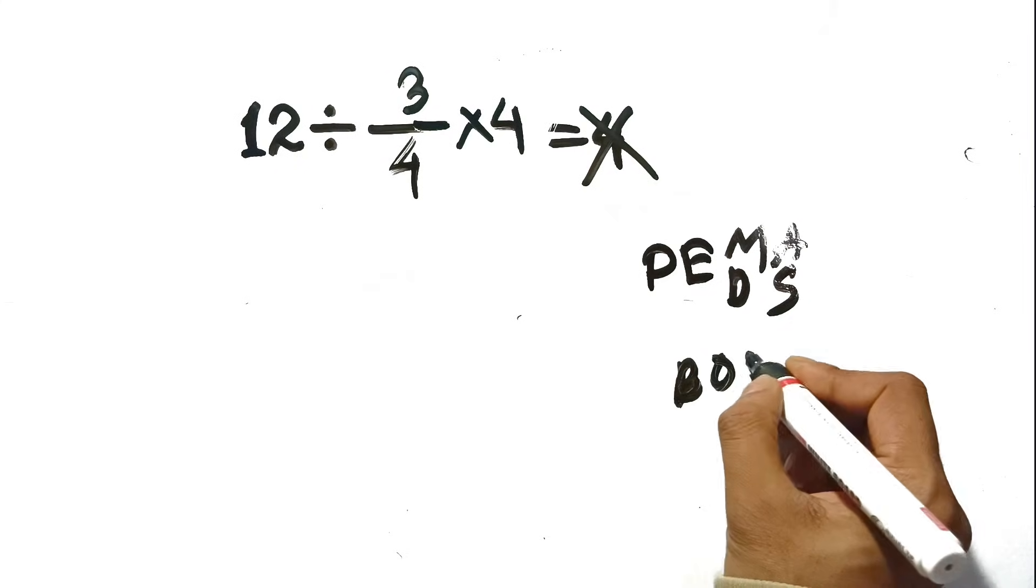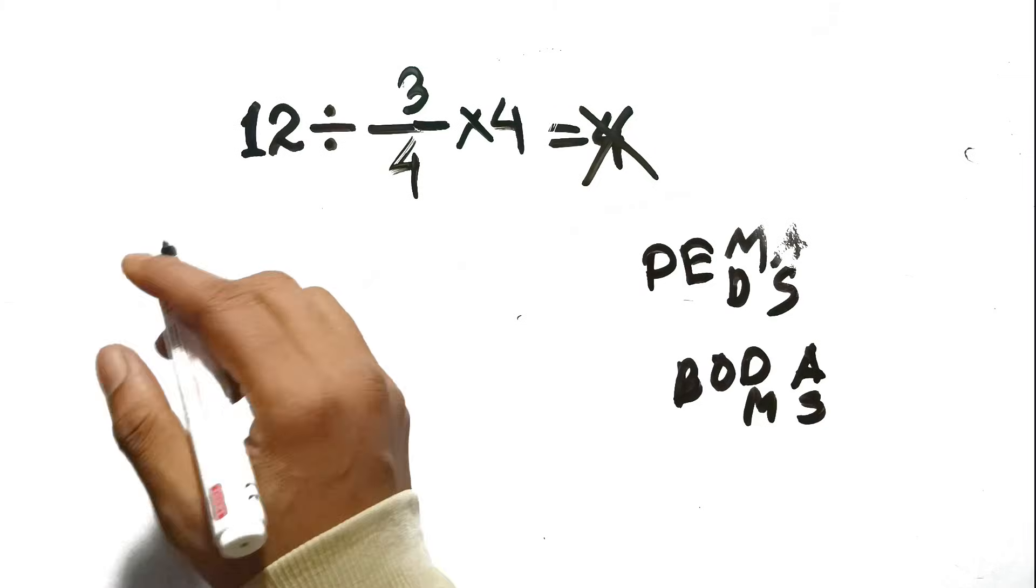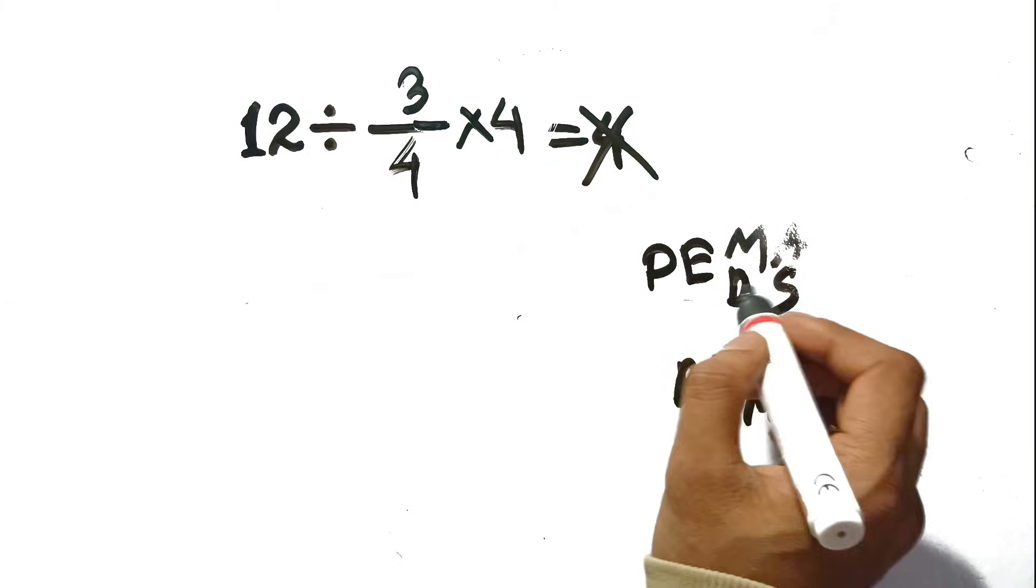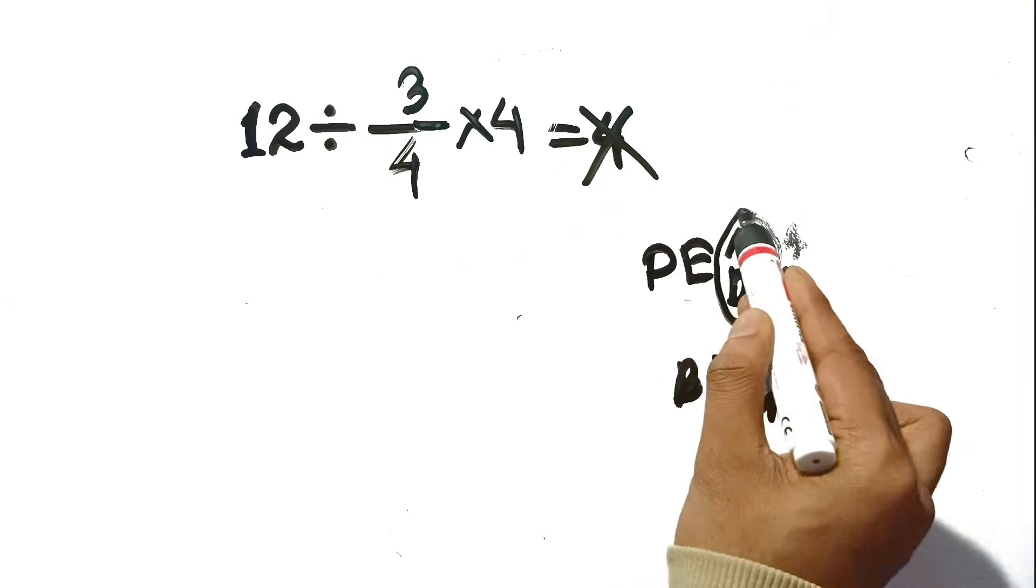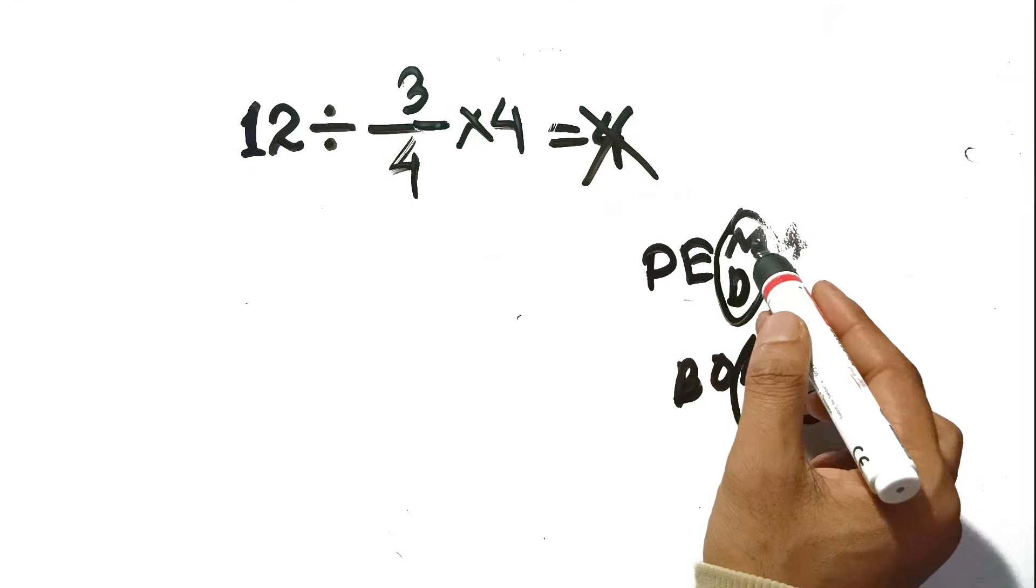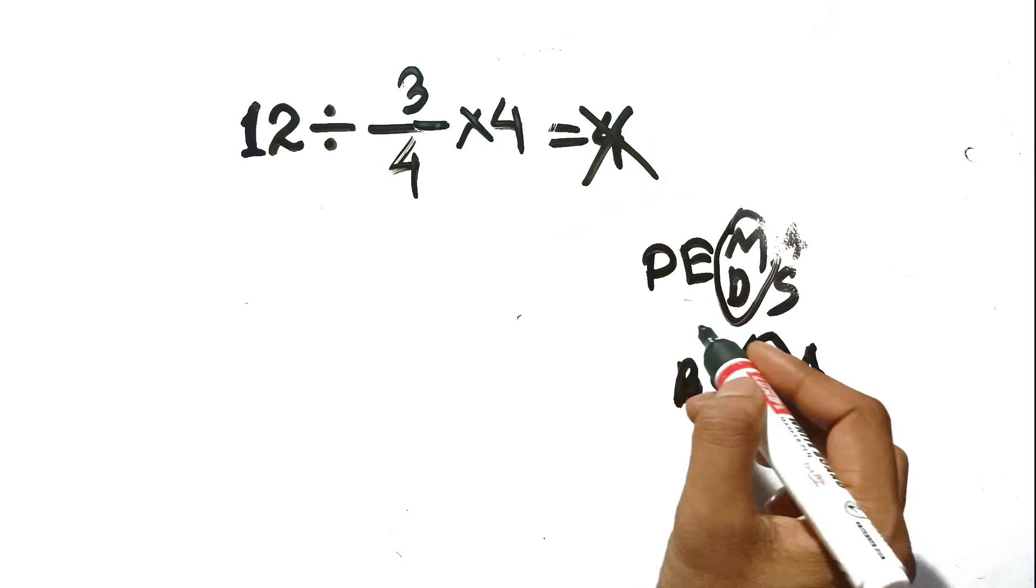OK, so here's the reality check. The reason you can't just cancel those 4s is because of the order of operations, specifically PEMDAS or BODMAS. The rule everyone forgets is that multiplication and division are equals. They have the exact same priority. You don't do multiplication first just because it looks like a group. You have to solve the problem strictly from left to right, like reading a sentence.